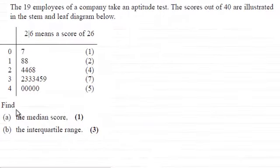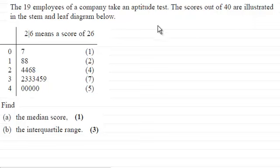Hi there. Now for this question, we're told that 19 employees of a company take an aptitude test and the scores out of 40 are illustrated in the stem and leaf diagram below.